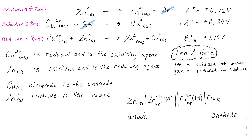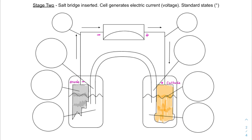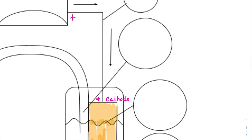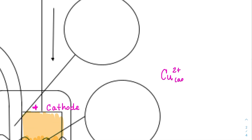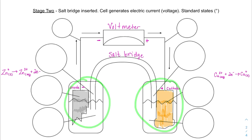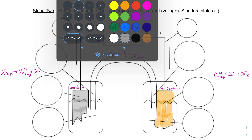Now on to the particulate labeling. The zinc half reaction shows zinc solid producing electrons and turning into zinc ions — two electrons come off for every one zinc. On the other side, copper two-plus ions in solution gain those two electrons; one copper gains two electrons and goes into copper solid form with a zero oxidation state. I also have the voltmeter here and the cell bridge, which has been inserted — so the reaction has started. These are called the half cells.